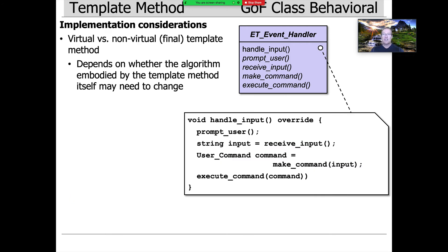Some other interesting implementation considerations: do you want virtual methods for your template method, or non-virtual — what Java calls final methods? If it's defined as virtual, you can change the template method itself if you need a different set of steps. If you make it non-virtual or final in Java, you can't change the template method and you're stuck with whatever the steps were. The obvious decision point is: do you ever anticipate the algorithm and its steps changing? If yes, make it virtual; if no, make it non-virtual. In my experience, I typically make my template methods virtual, because you never know when you might need to change them. You're better off future-proofing your design, and it doesn't harm you at all to make it virtual. In fact, if it's being called back in the context of a framework like the reactor, you need it to be virtual.